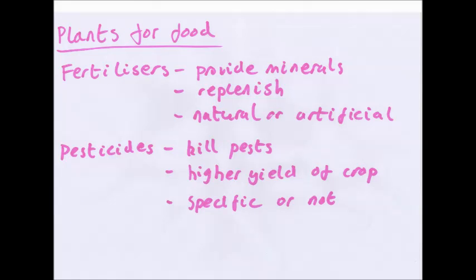There'll be more on coronary heart disease and other diseases in the next video on health in general. Now, plants for food. When you're making a crop, you want as high a yield as possible to make the most money and waste the fewest resources, so you want as many plants healthy as possible. Two ways you can do this: fertilisers and pesticides.